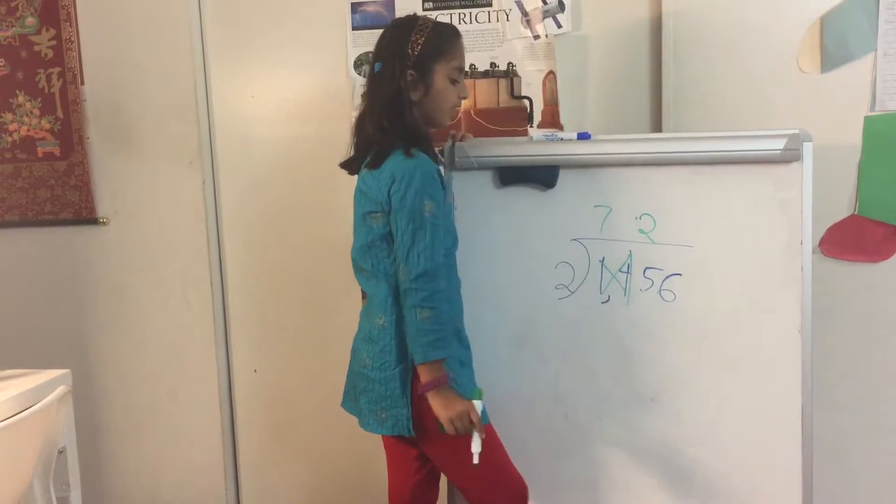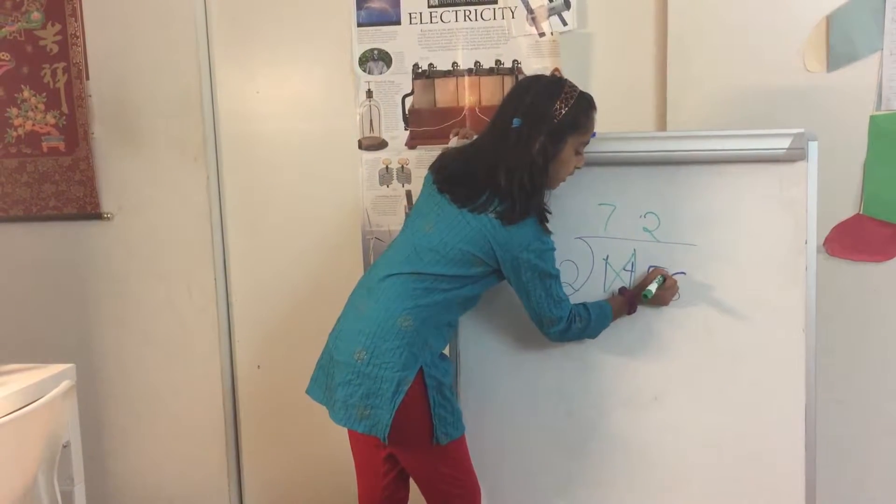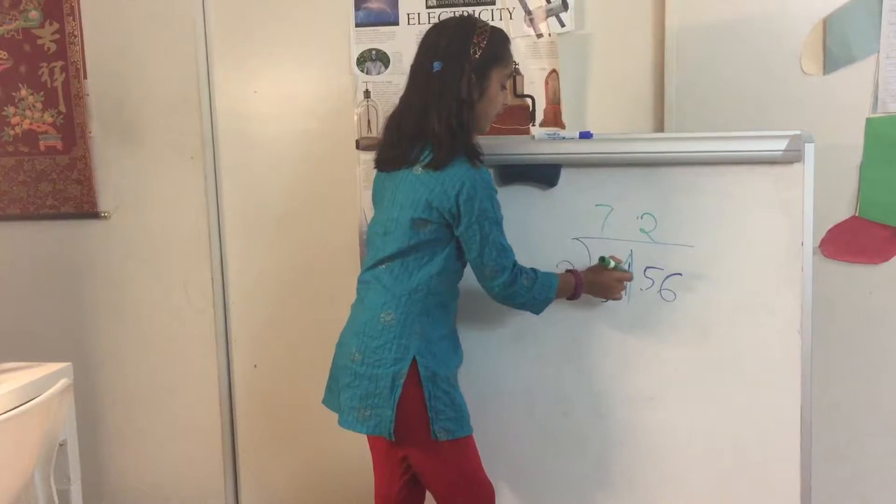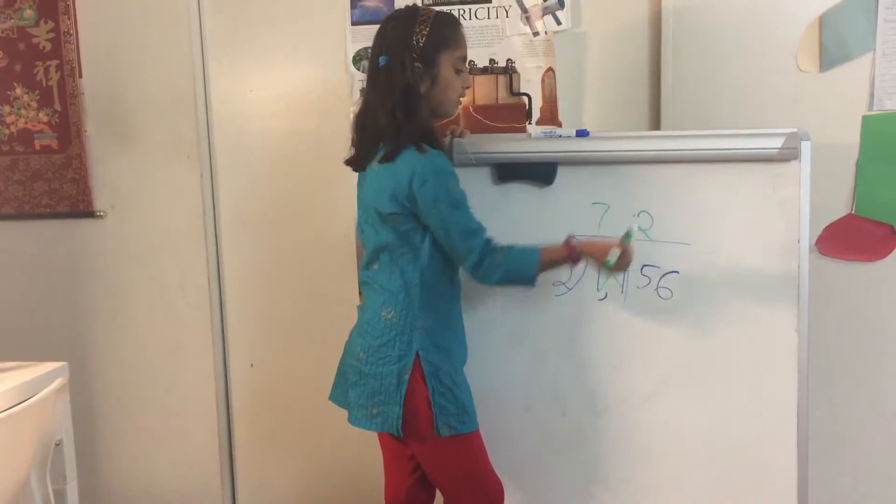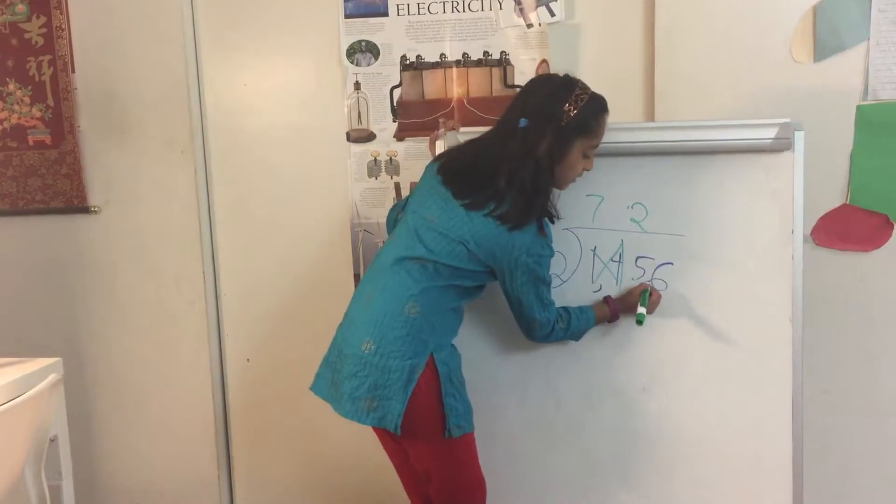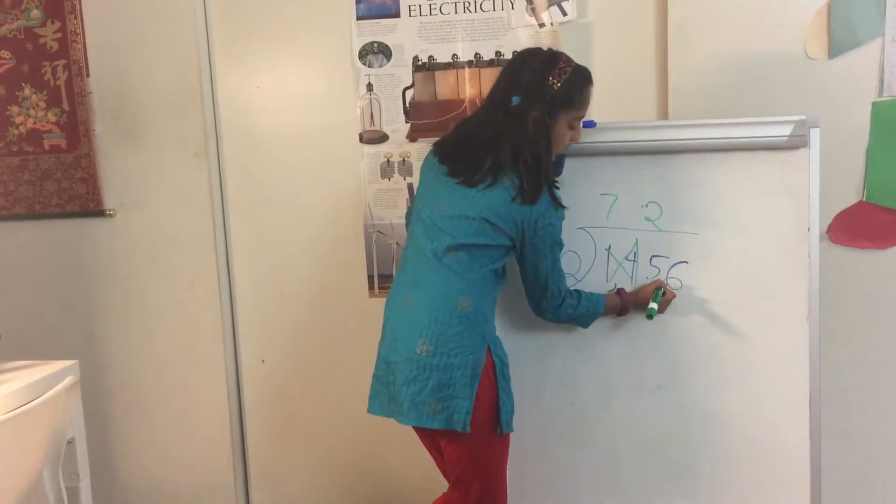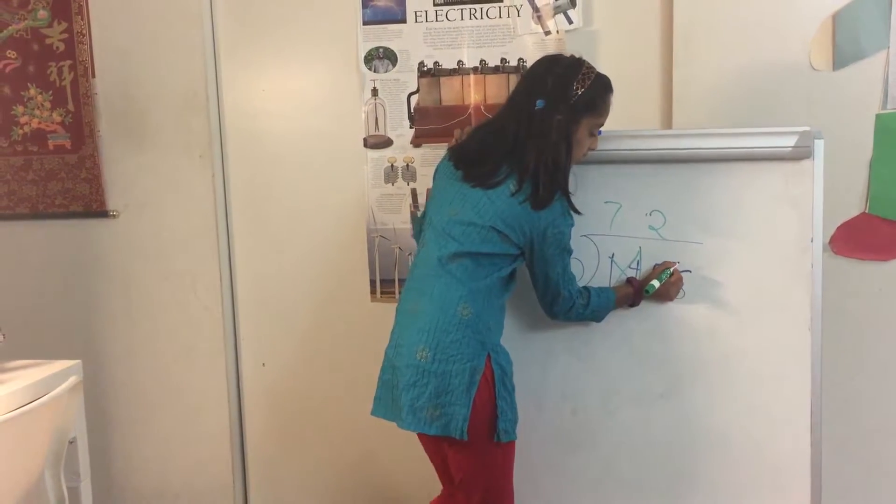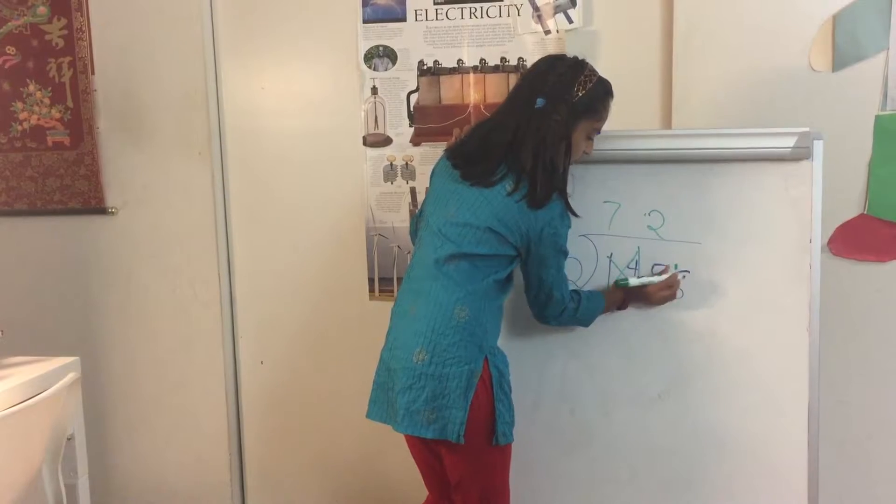So five minus four is one. So you write one here, which is the remainder basically. If you did five divided by two, it would be two remainder one, right? So say you were doing that, then you write the remainder here.